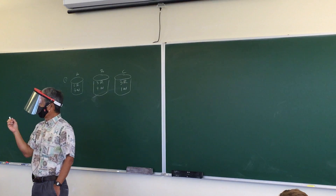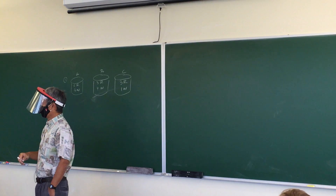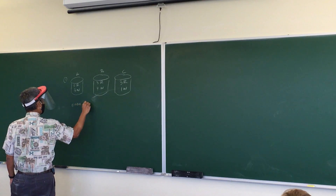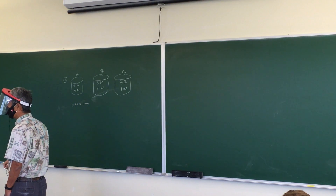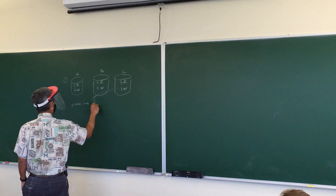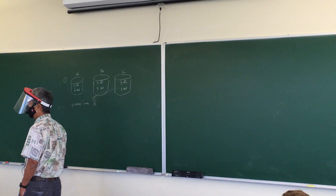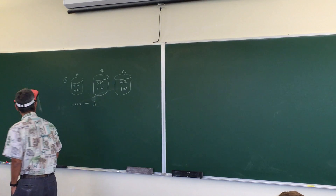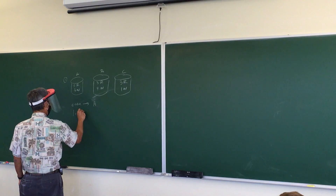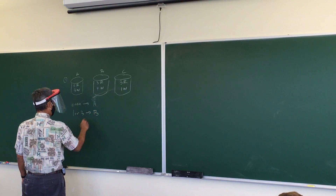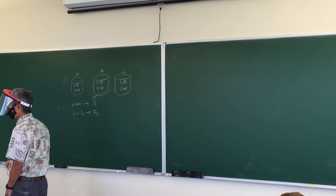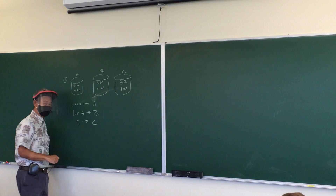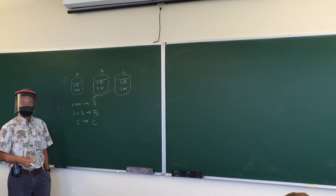So what you're going to do is roll a die. If an even number comes up, you're going to pick a ball from jar A. If a one or a three comes up, you're going to pick a ball from jar B. And if a five comes up, you're going to pick a ball from jar C. Do you guys understand what's happening so far?